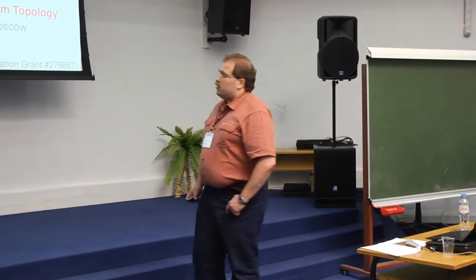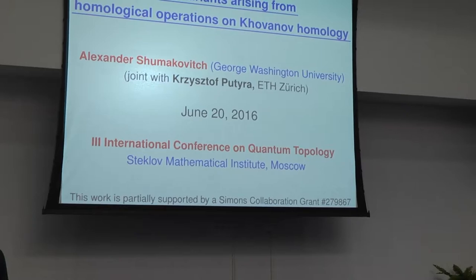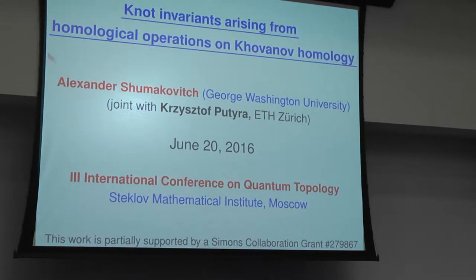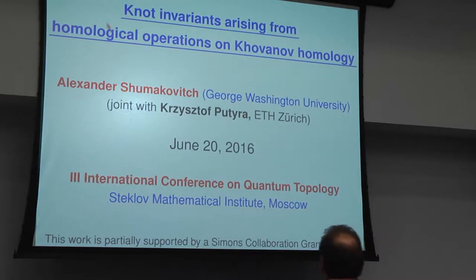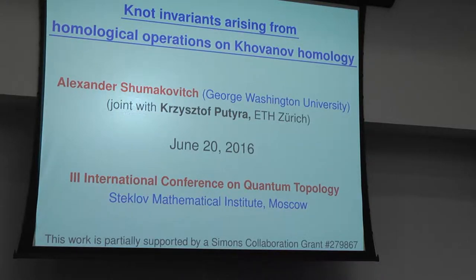I'll start by explaining what Khovanov homology is and how it was defined to, in a sense, generalize the Jones polynomial. Then, in order to tell you which homological operations I'm going to talk about, I will define unified homology theory due to Chris Poutier, my co-author. Then I will show what these operations are, how they define invariants with interesting properties — properties I personally don't know any other kind of invariants to have. Finally, the last two slides will show some experimental data.